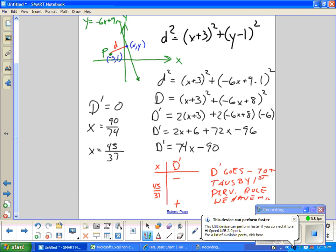And how do I find the Y for it? Well, you just plug it back into the... Yeah. Y equals -6x plus 9. Plug it in. Y equals -6 times 45/37 plus 9.